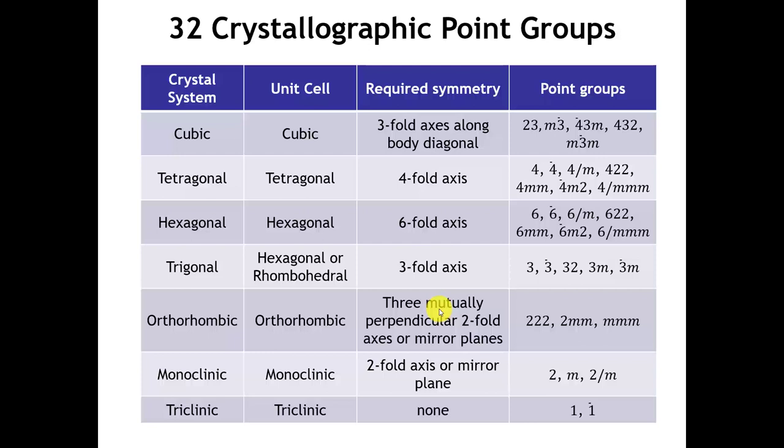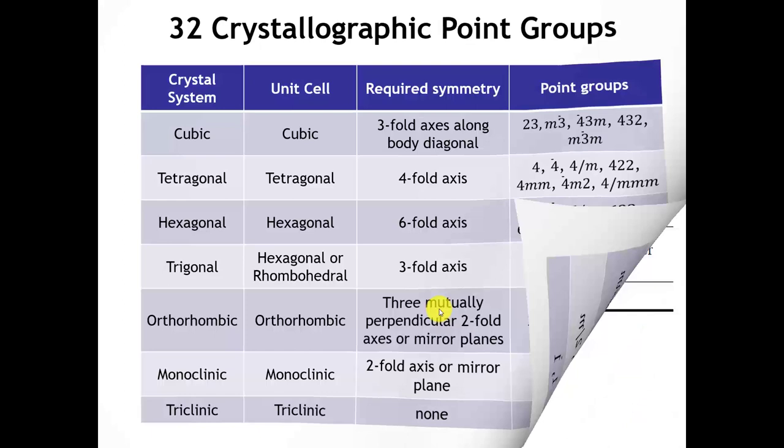If we think about the way that we organized the names of the space groups and the way that we displayed them in the International Tables, in the monoclinic case, we looked down the A, B, and C axes, and the long space group name contained the symmetry elements along the A, B, and C directions. But that approach wouldn't necessarily make sense for some of the other crystal systems. For example, in a cubic crystal system, the symmetry along A, B, and C all have to be the same, so it wouldn't tell us very much if we only saw the symmetry elements in those directions. That leads us to different ways of specifying the name of the space group and representing the symmetry elements in the International Tables.